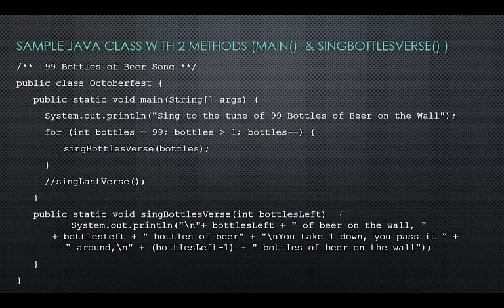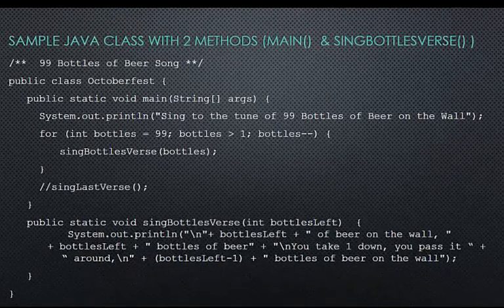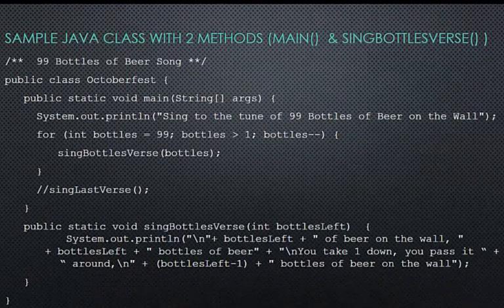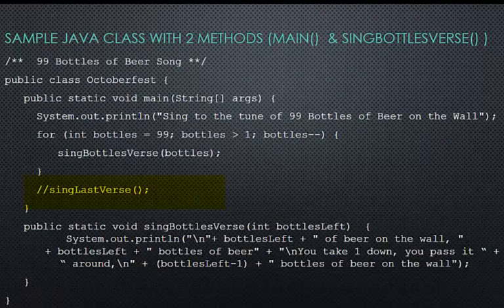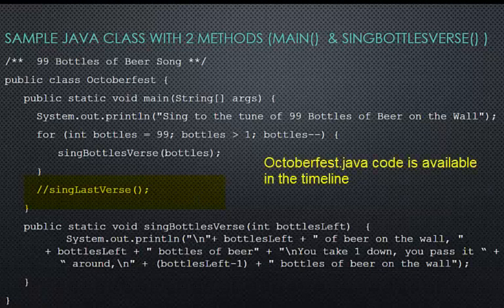Here is a sample program that uses two methods, Main and Sing Bottles verse. Note that this really needs a Sing Last Verse method. Since we run out of bottles, it is a little bit different in that last verse from the other 98. Because of that, it is left as an exercise for you to complete.